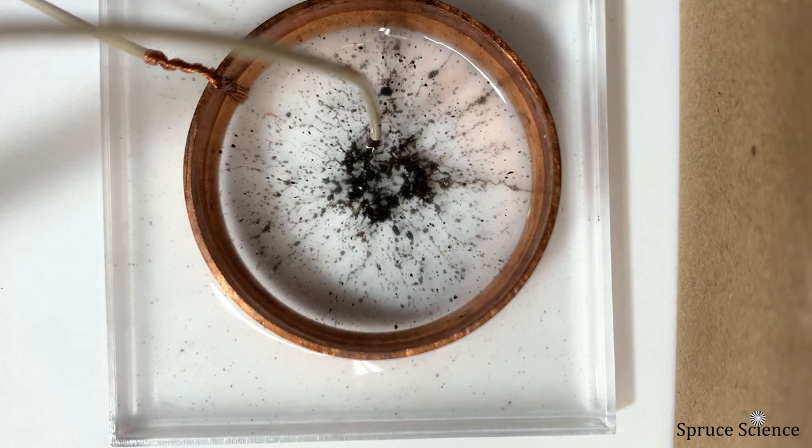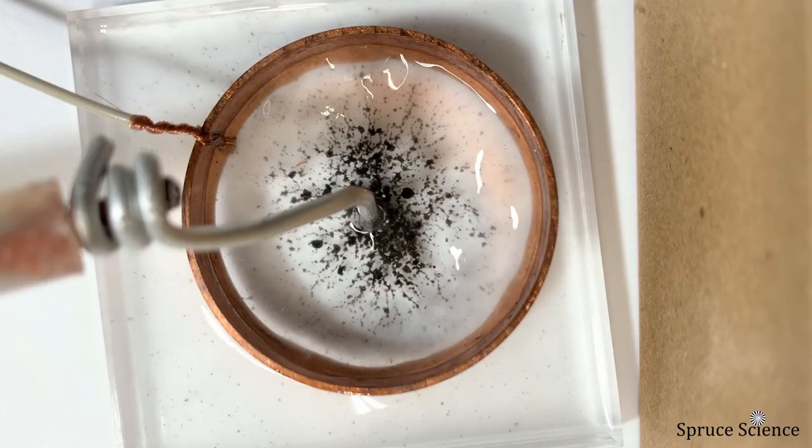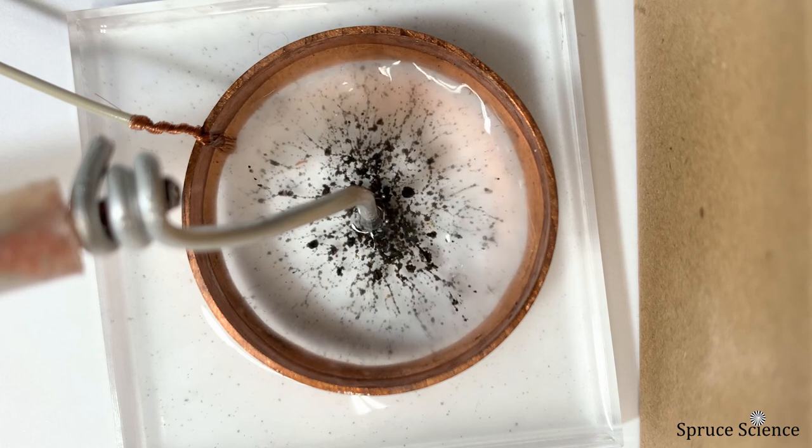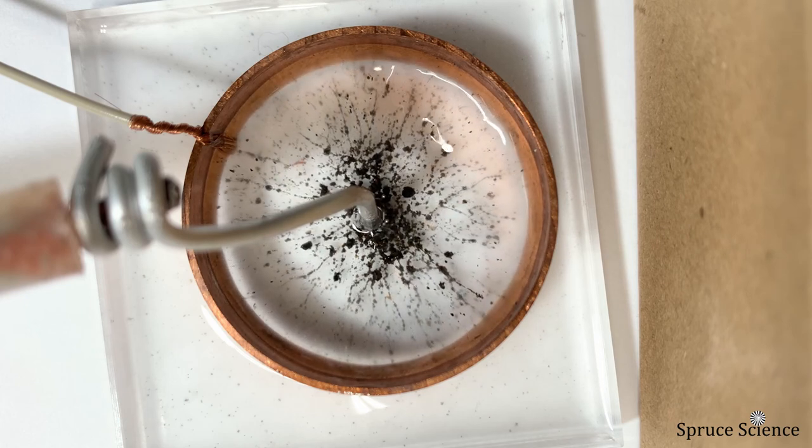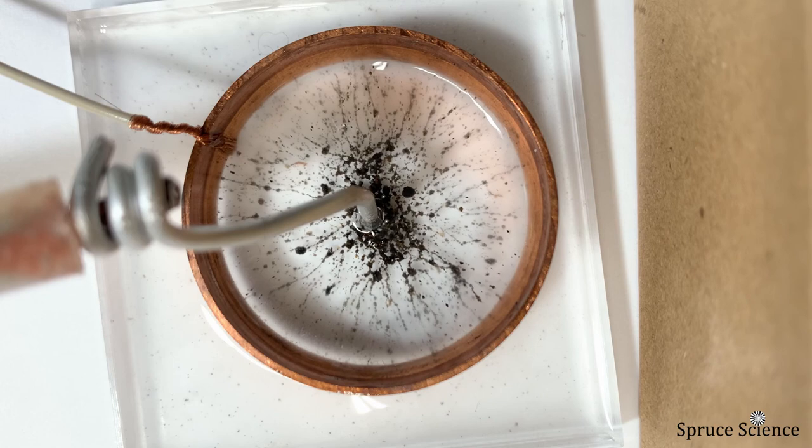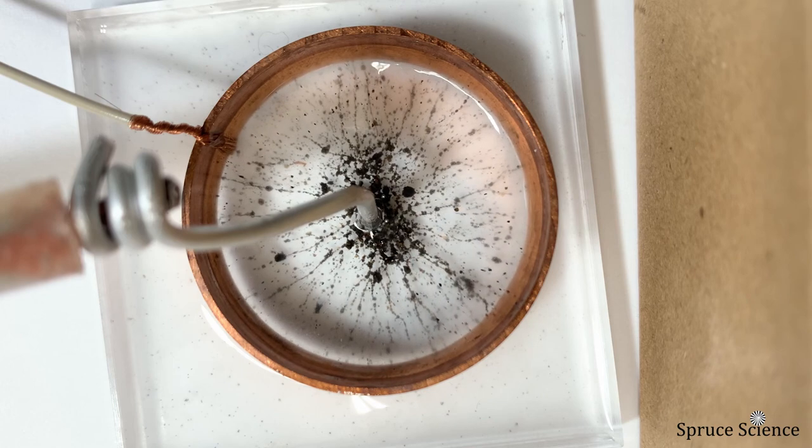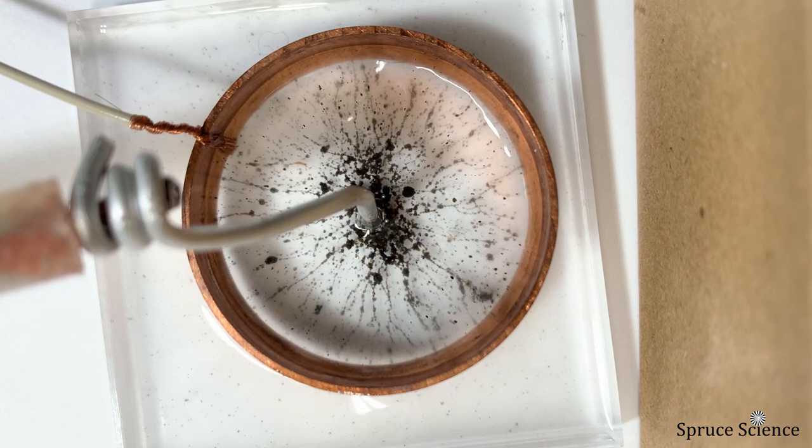The same dielectric particles then experience a force from the existing electric field. If the force they experience along the field line is able to overcome the opposing forces, then the particles move towards the ground electrodes.